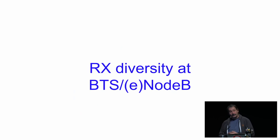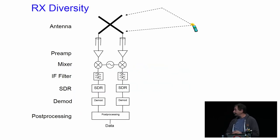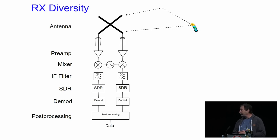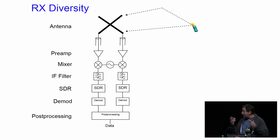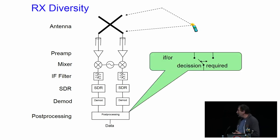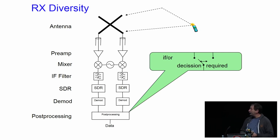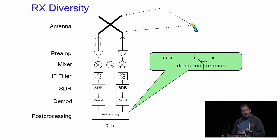Since GSM, base stations have always had at least two antennas — RX diversity. We receive the mobile device with two antennas, compensating for different propagation paths using mixers, SDRs, and post-processing. One approach is a software switch that selects whichever antenna path has the best quality, which helps when one path has high noise or interference.